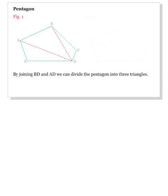So we draw diagonals BD and AD. Now, we use the reasoning we used for the quadrilateral, and find that the sum of the angles of a pentagon is three times 180 degrees, which is 540 degrees.